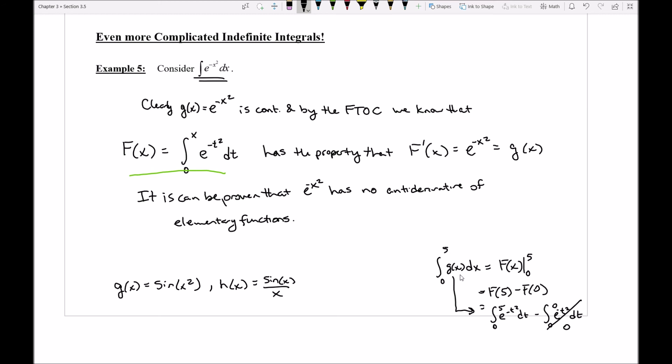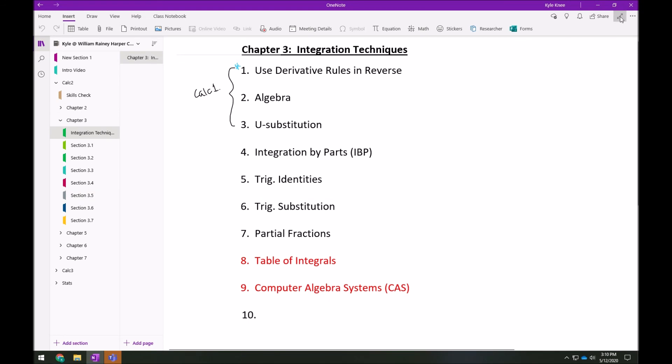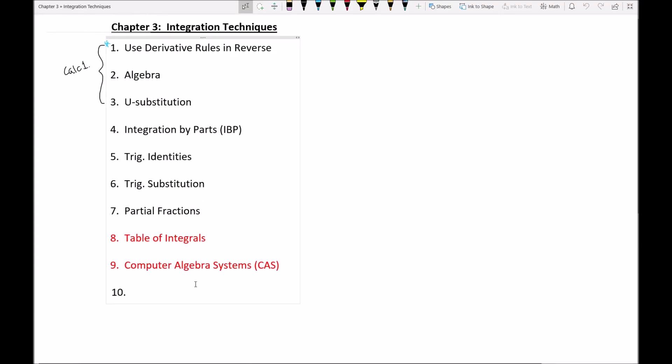In the next section, we're going to start to take a look at this complicated integral of e to the negative x squared and start to see how can we work with an integral that's too difficult to actually directly integrate. And as you might be able to recall, back in our integration techniques, there is a new mystery number 10 technique.